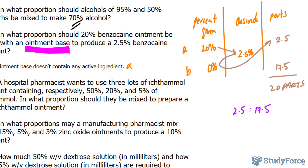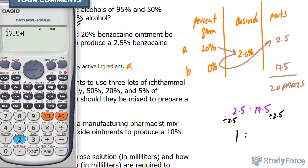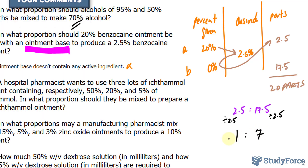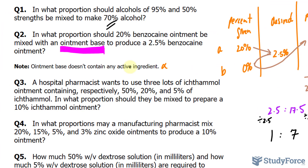To reduce this down, the easiest way is to find the lowest number in the ratio, which is 2.5, and divide both terms by 2.5 — that's another technique for reducing ratios. So 2.5 divided by 2.5 is 1, and 17.5 divided by 2.5 makes 7. So you need one part of the 20% benzocaine and 7 parts of the base ointment to produce 2.5% benzocaine ointment.